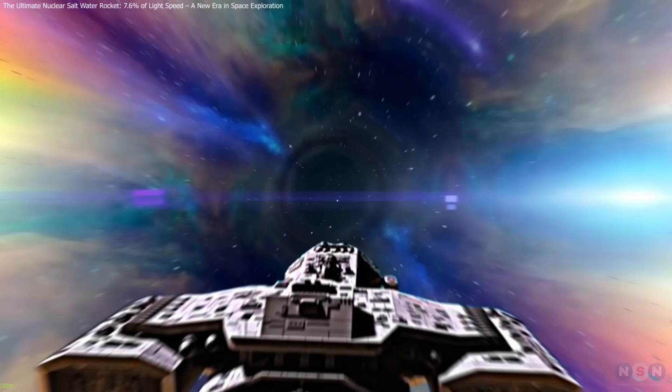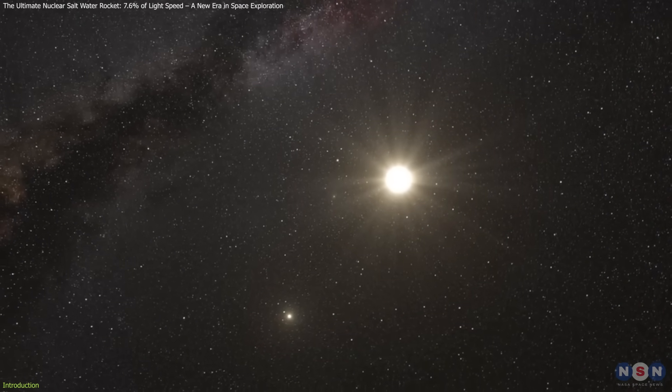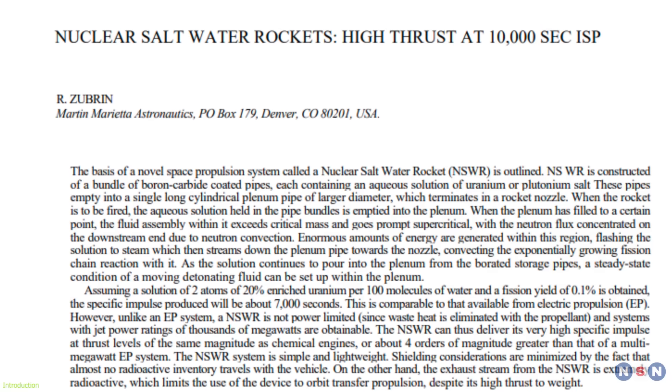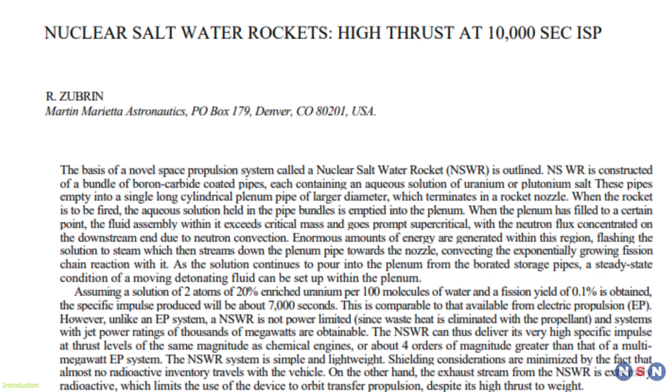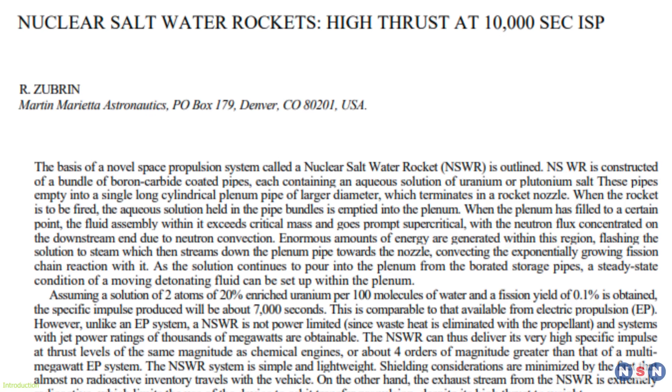Imagine reaching Alpha Centauri in just 60 years, a journey that would normally take thousands. This could become a reality with the Nuclear Saltwater Rocket, NSWR, a radical propulsion concept by Robert Zubrin.